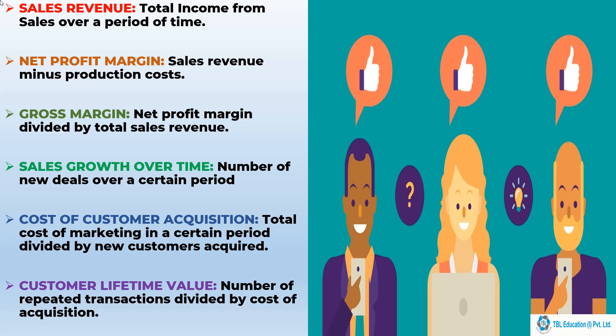Now the third is interesting — it is Gross Margin: Net Profit Margin divided by the total sales revenue. The amount of money that you make net, which is basically profit minus loss, gets divided by your total revenue. This will allow you to get an average of the amount of money that you make per rupee.